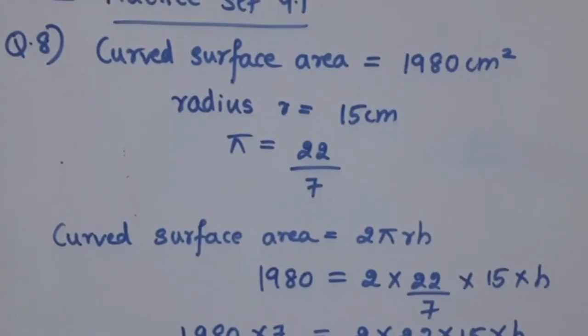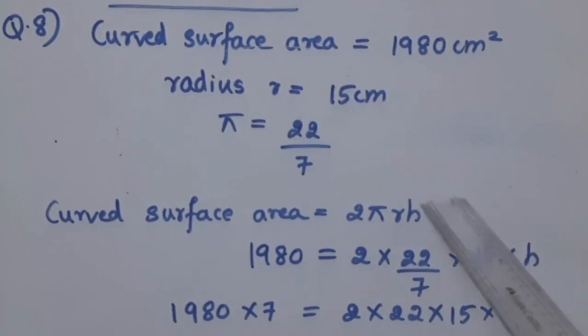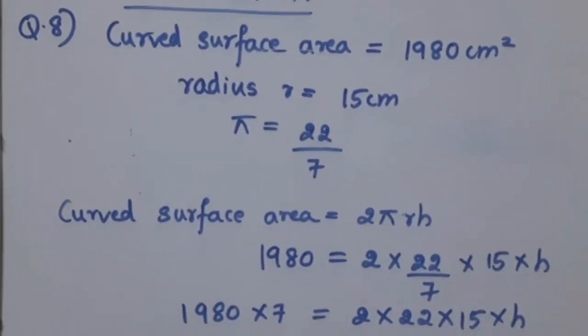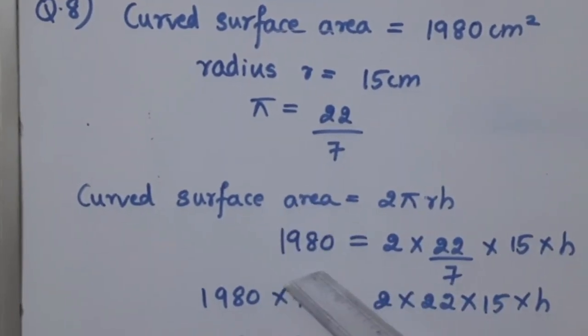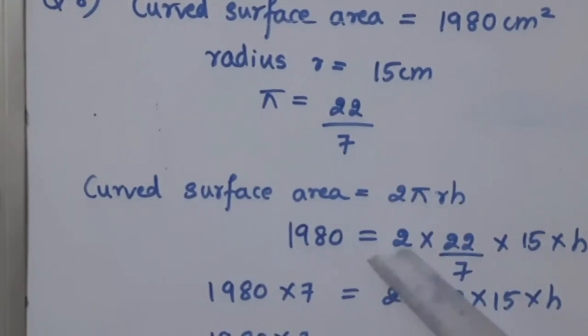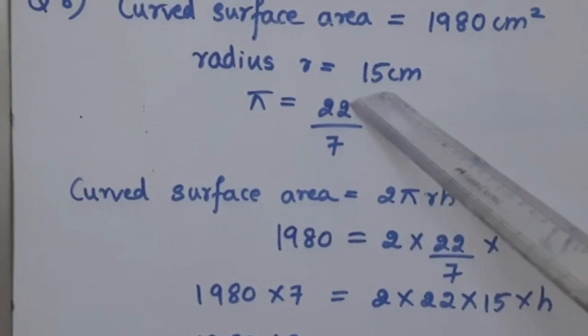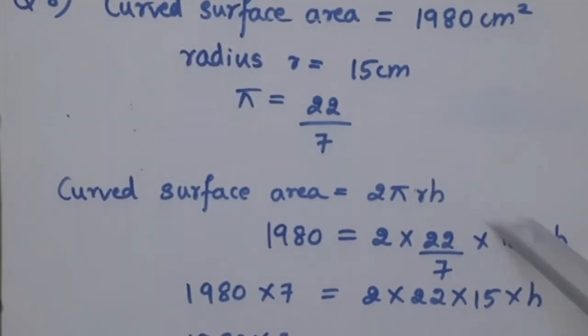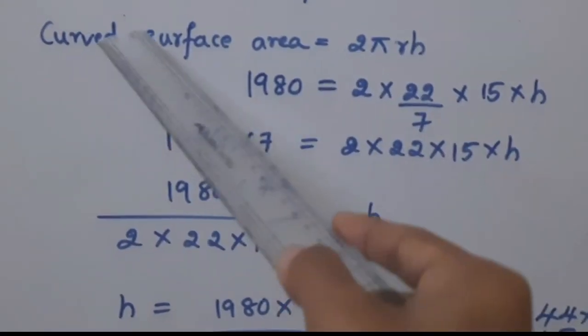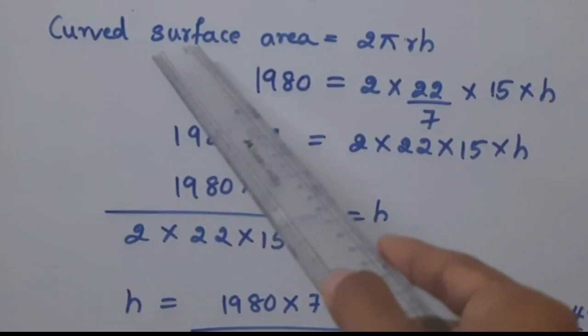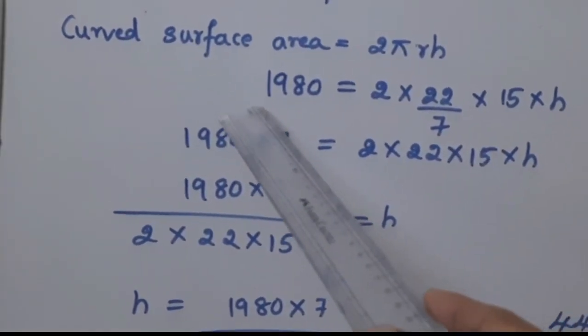Therefore, we will directly write the equation for curved surface area which is equal to 2πRH. From this equation we will find the H that is height. Curved surface area is already given 1980. Therefore, 1980 is equal to 2 multiplied by π is 22 upon 7, multiplied by R is 15, multiplied by H. This 7 is divided here, so let's take the 7 to this side, then it becomes multiplied. Therefore, 1980 multiplied by 7 is equal to 2, 22, 15 and H.